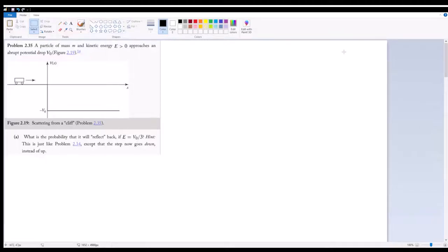In 2.35, we are given a particle of mass M and kinetic energy E greater than zero, modeled as a cart, as we will see in Part B.